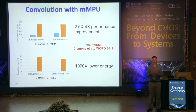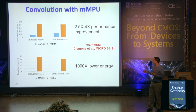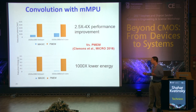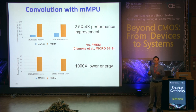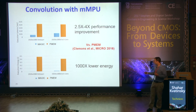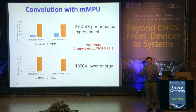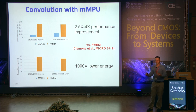To give some sense of the benefits we can get from MMPU: these are preliminary results from convolution with MMPU, compared to PMEM — an architecture from ISCA/Last Micro — and a work from NVIDIA based on CPU with an efficient memory subsystem for convolution. In terms of performance we get a 2.5 to 4x improvement. And even more importantly, in energy it is three orders of magnitude better because we don't move the data. So it is extremely energy efficient with better performance — the advantages are enormous.